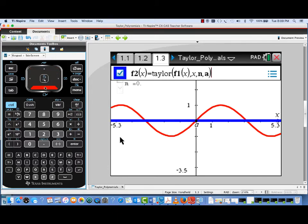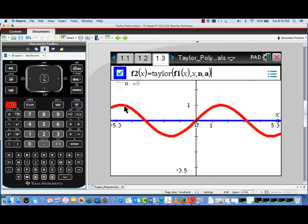and F2 of X is the Taylor polynomial for F1 of X of degree N centered at A. And A is, its value is controlled by that movable point.